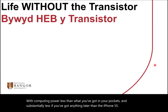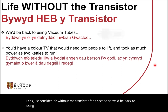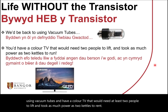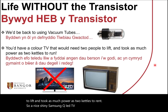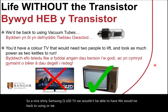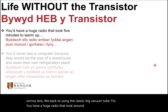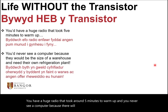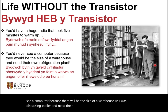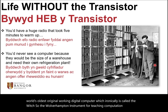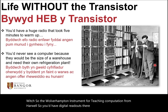Let's consider life without the transistor for a second. We'd be back to using vacuum tubes, and you'd have a colour TV that needed at least two people to lift and took as much power as two kettles to run. A nice shiny Samsung QLED TV wouldn't exist — we'd be back to the classic big vacuum tube TVs. You'd have a huge radio that took around five minutes to warm up, and you'd never see a computer because they would be the size of a warehouse, as we discussed, and need their own refrigeration plant. Here we have the world's oldest original working digital computer, which is called the Witch — the Wolverhampton Instrument for Teaching Computation from Harwell — with digital readouts on a strip of paper.